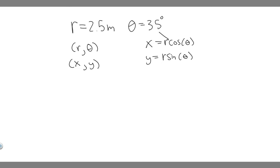So if we want to find x, we have to plug in r and theta into this formula. And if we want to find y, we just plug in r and theta into this formula. So let's go ahead and do that. x is going to be equal to r, which is 2.5 meters, multiplied by the cosine of the angle. And the angle in this case is 35 degrees.